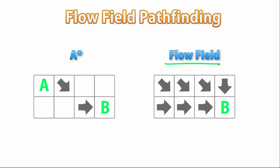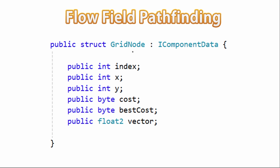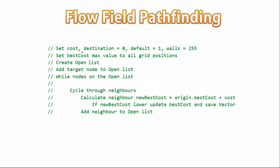Technically flow-field pathfinding is going to be faster the more units we have, since we just have to calculate the path once. So since this course is all about DOTS — which is all about tons of units — let's implement flow-field pathfinding. Now let's cover how the algorithm works. On each grid node we're going to need to have three things: a cost, a best cost, and a vector. The cost is how expensive it is to traverse through that grid node — this is how we can have variable costs for different types of terrain, like going through water takes more energy than going through flat terrain. This cost is also how we define walls — we give them a very high cost. The destination node gets a cost of 0, normal walkable nodes get a cost of 1, and wall nodes get the max cost. We're going to use a byte to store the cost, so the max cost will be 255 — really just for memory efficiency.